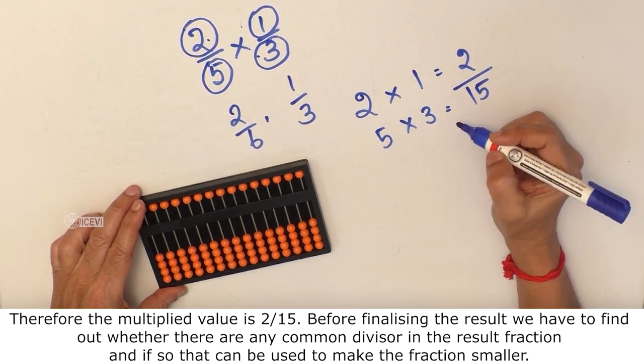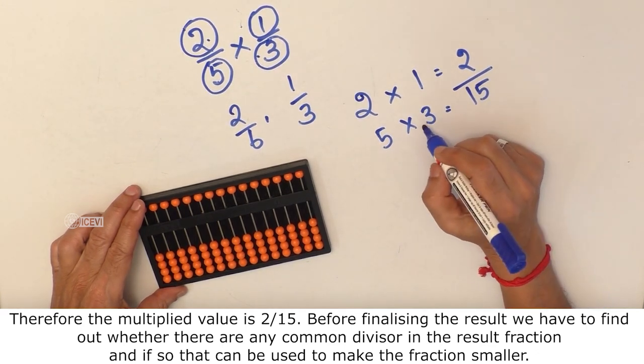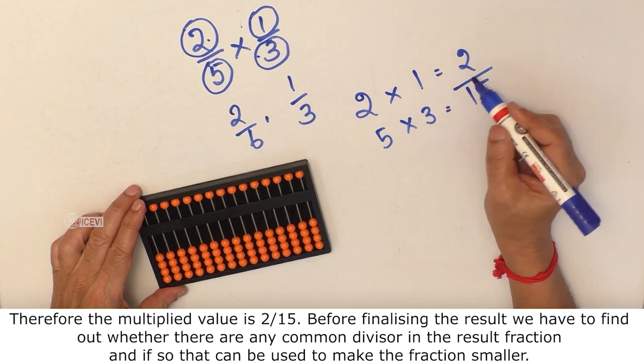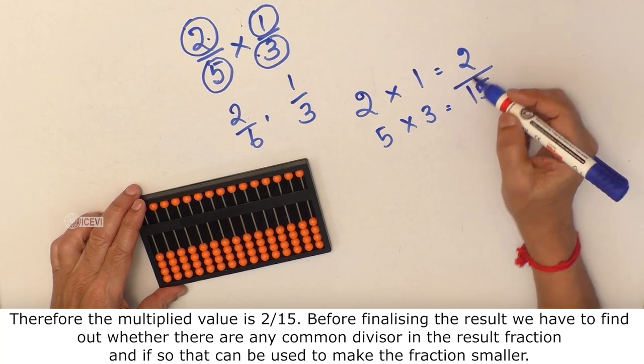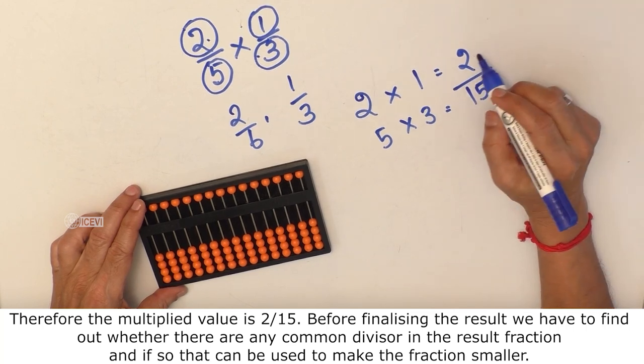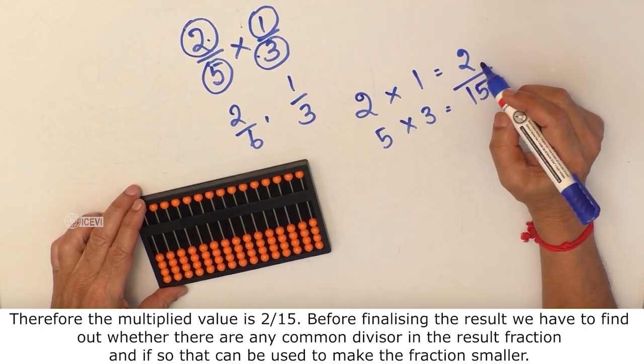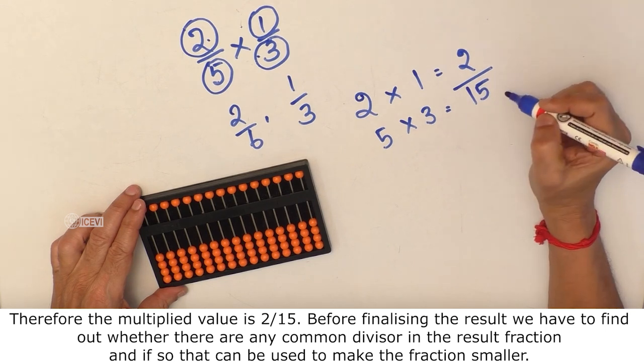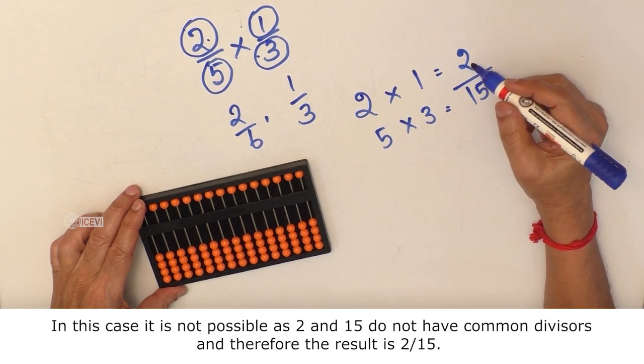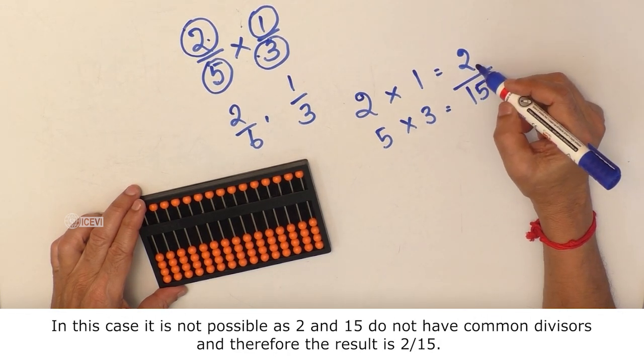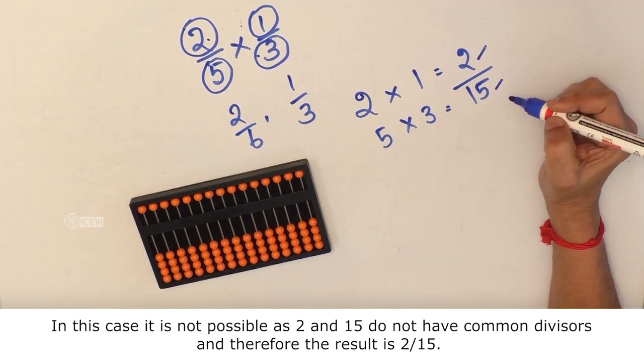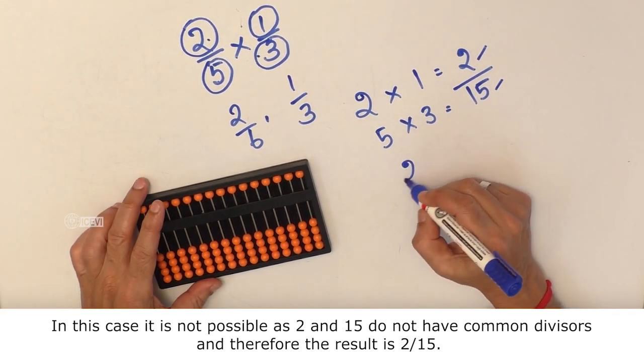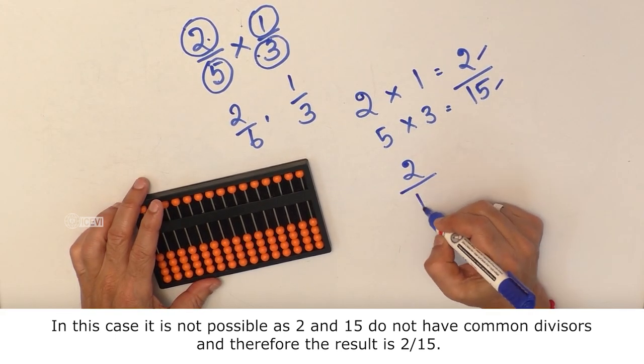Before finalizing the result, we have to find out whether there are any common divisors in the result fraction and if so, that can be used to make the fraction smaller. In this case, it is not possible as 2 and 15 do not have common divisors and therefore, the result is 2 by 15.